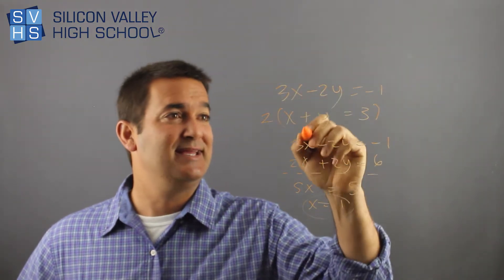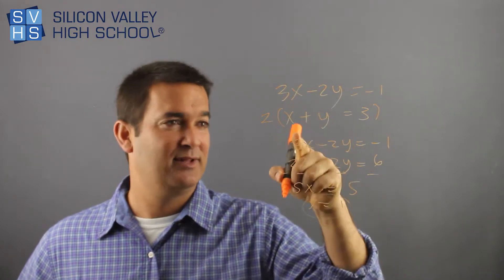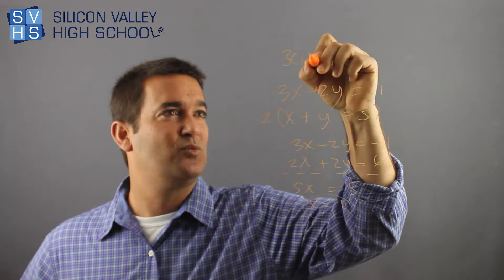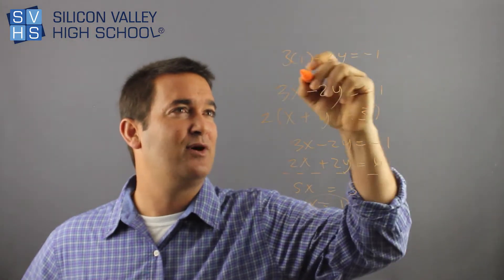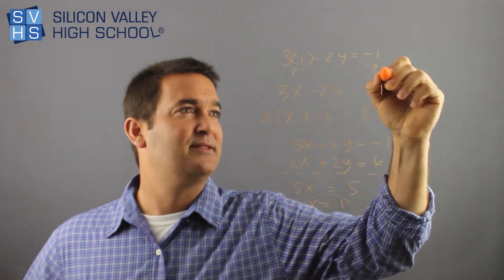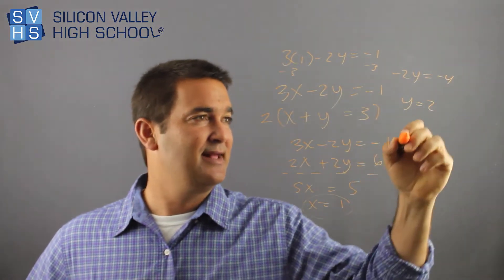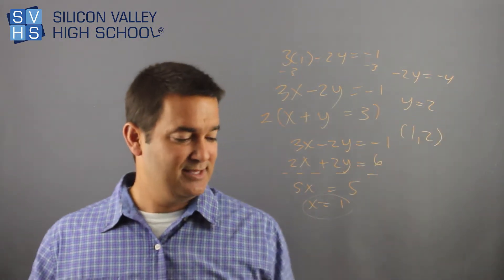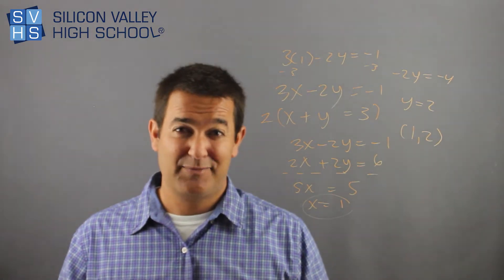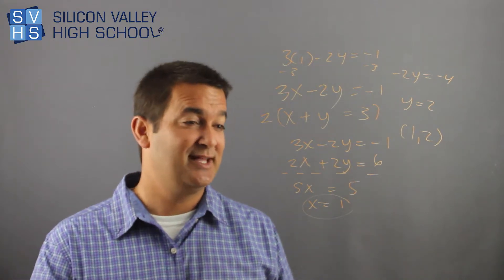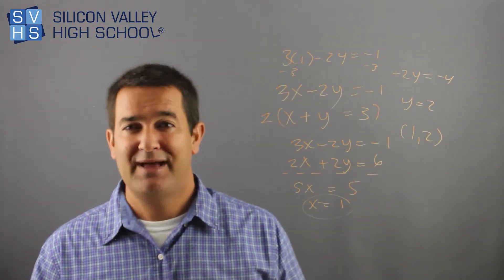Plugging 1 back into either problem. This guy looks better. Or actually, this guy looked better before I changed him. I'll put it in here. Putting 1 in here, I have 3 times 1 minus 2y equals negative 1. Minus my 3 minus my 3, negative 2y equals negative 4, y equals 2. So my answer then is 1, 2. So that's if it's not already set up perfectly. You can totally manipulate top or bottom of the two equations so that they do. So that's the addition method.